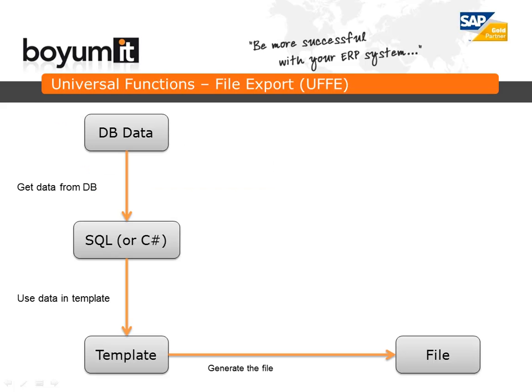In the feature area, the biggest new features are in the universal functions. We have added a new universal function called File Export, or UFE for shorthand. UFE is a universal function that allows you to export data from SAP into a custom file format.